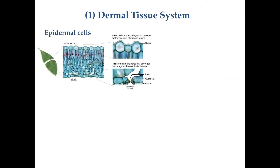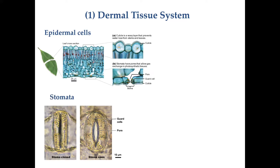Let's look at each tissue system in more detail. The dermal tissue system is located on the outermost part of the plant body. The dermal cells form the outermost layer, functioning as a protective barrier and secreting the waxy material that forms the cuticle — an adaptation that helps plants retain water and avoid drying out in a terrestrial environment.